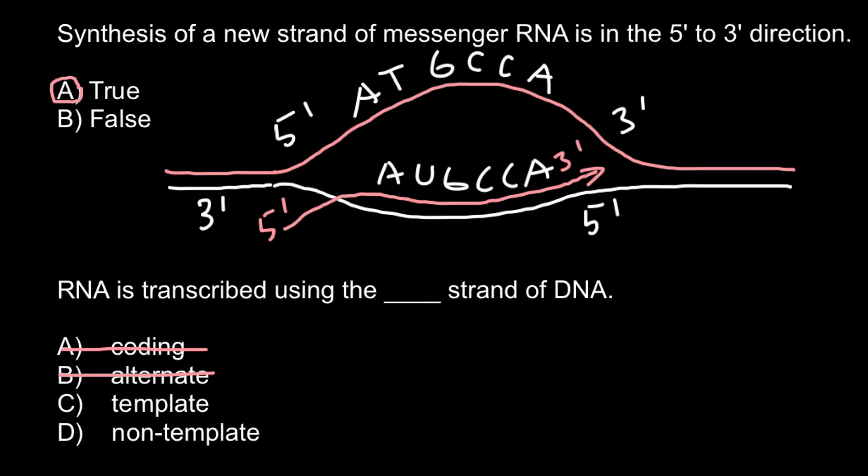And this strand here we call template. And as you remember, the strand here we call coding strand. So as you see, new messenger RNA would be produced using template strand of the DNA.